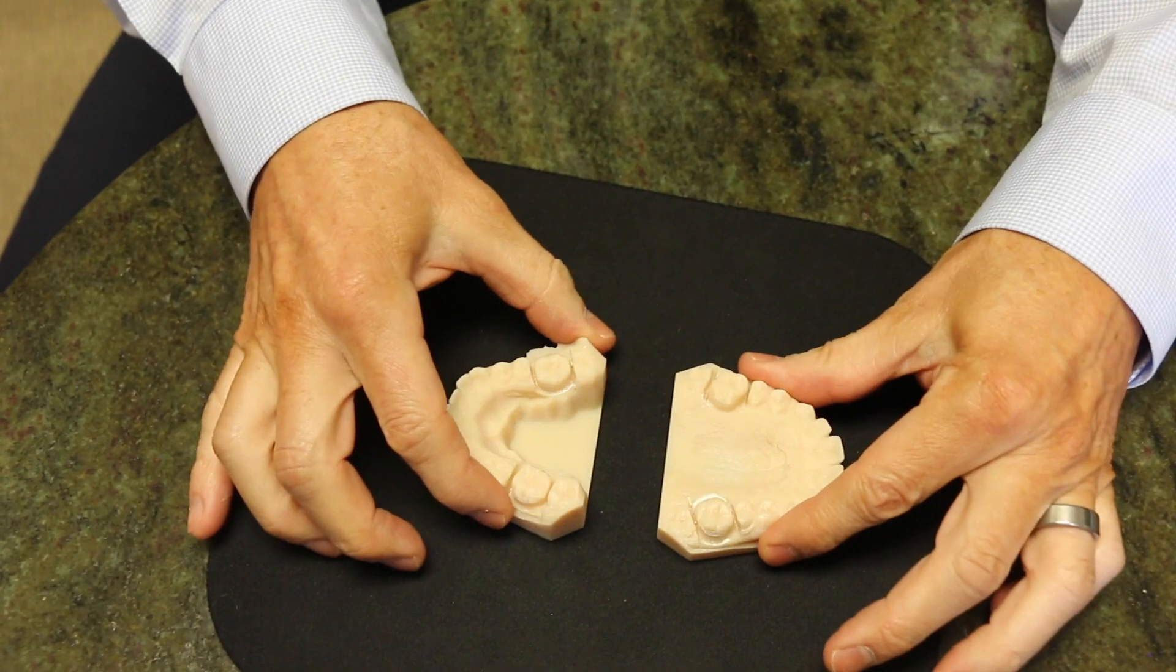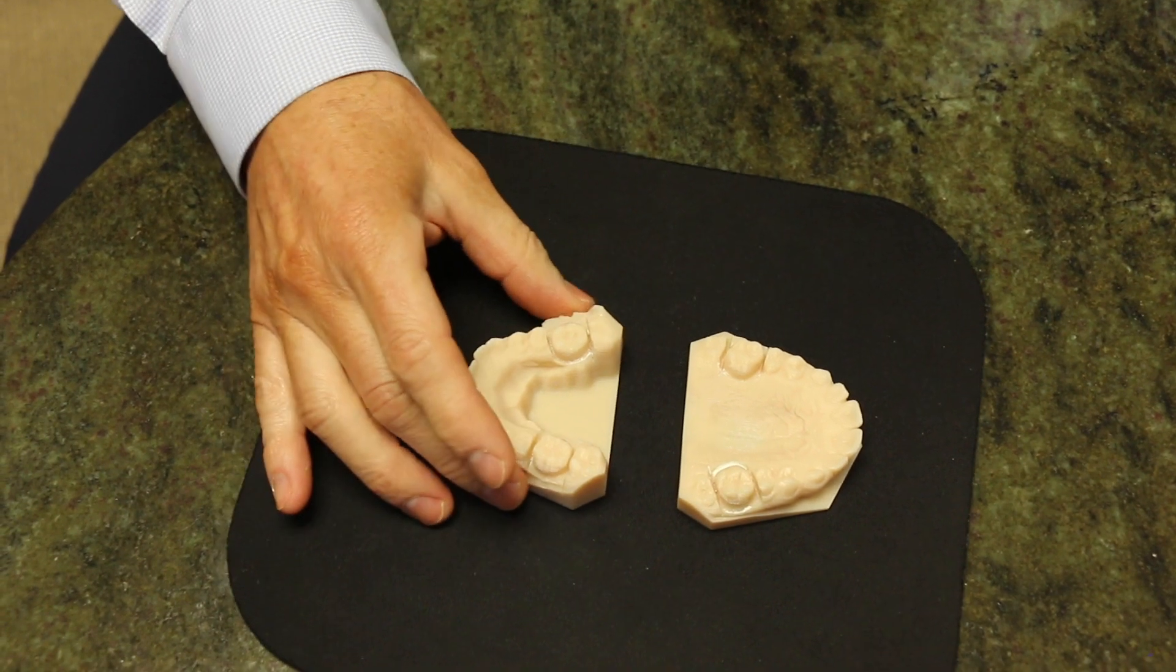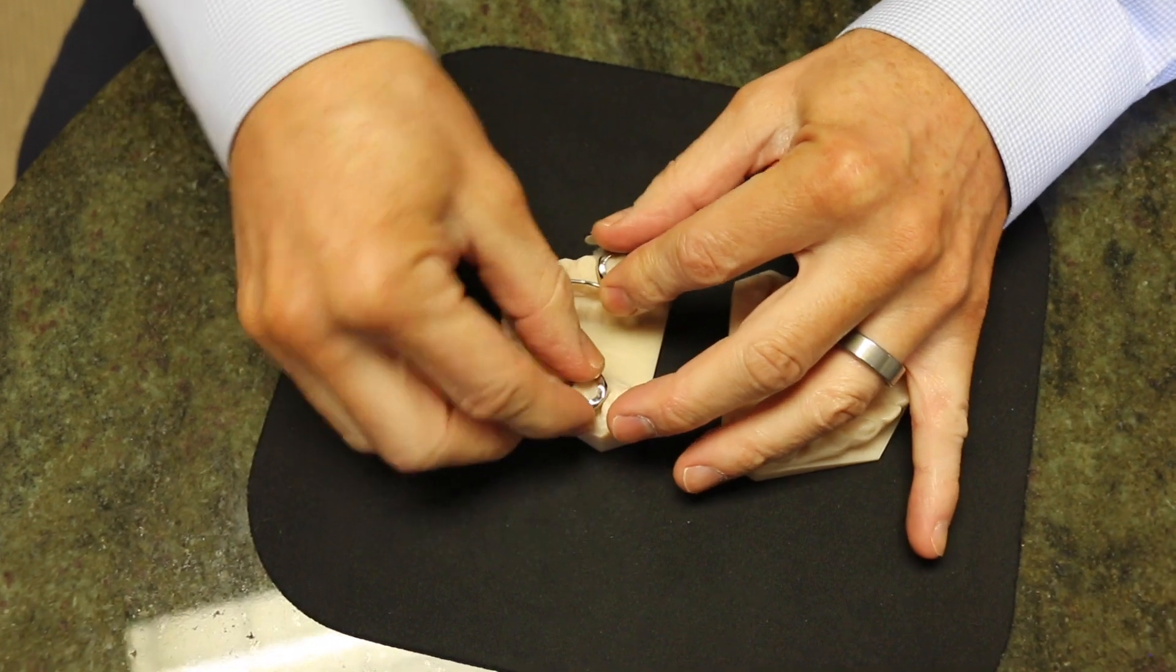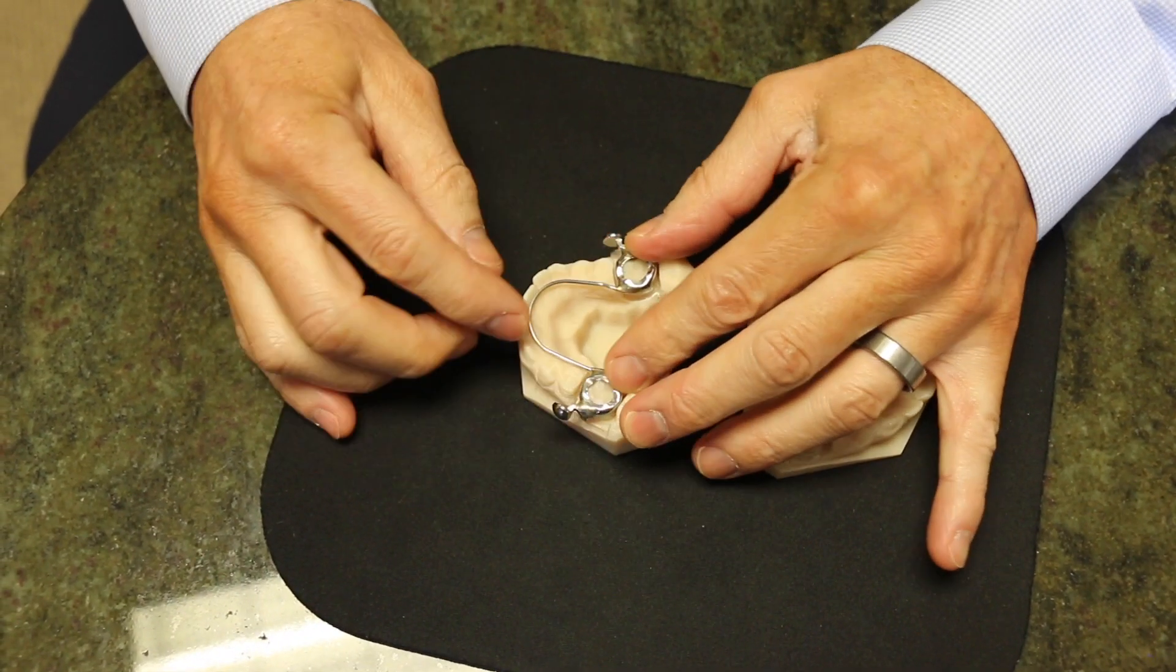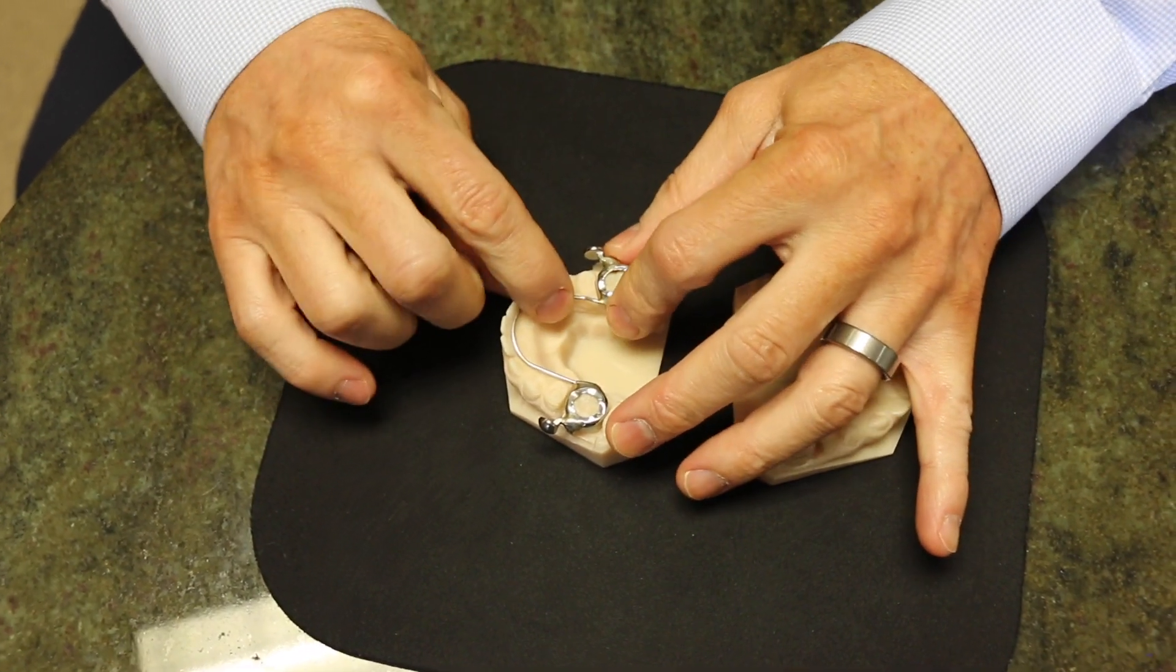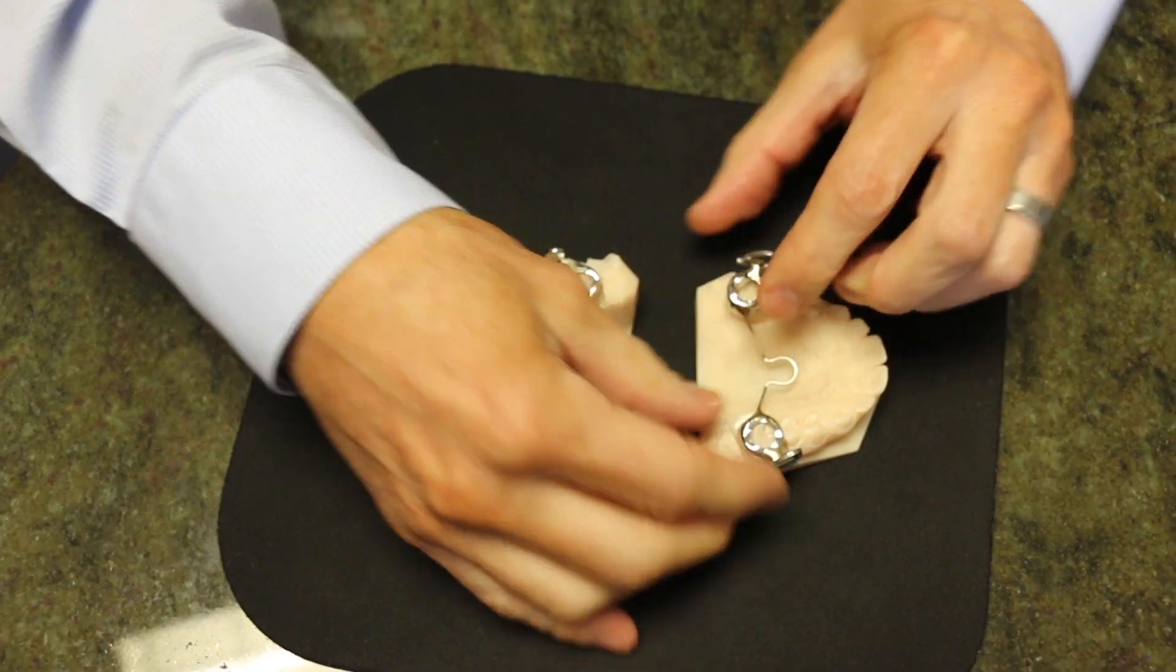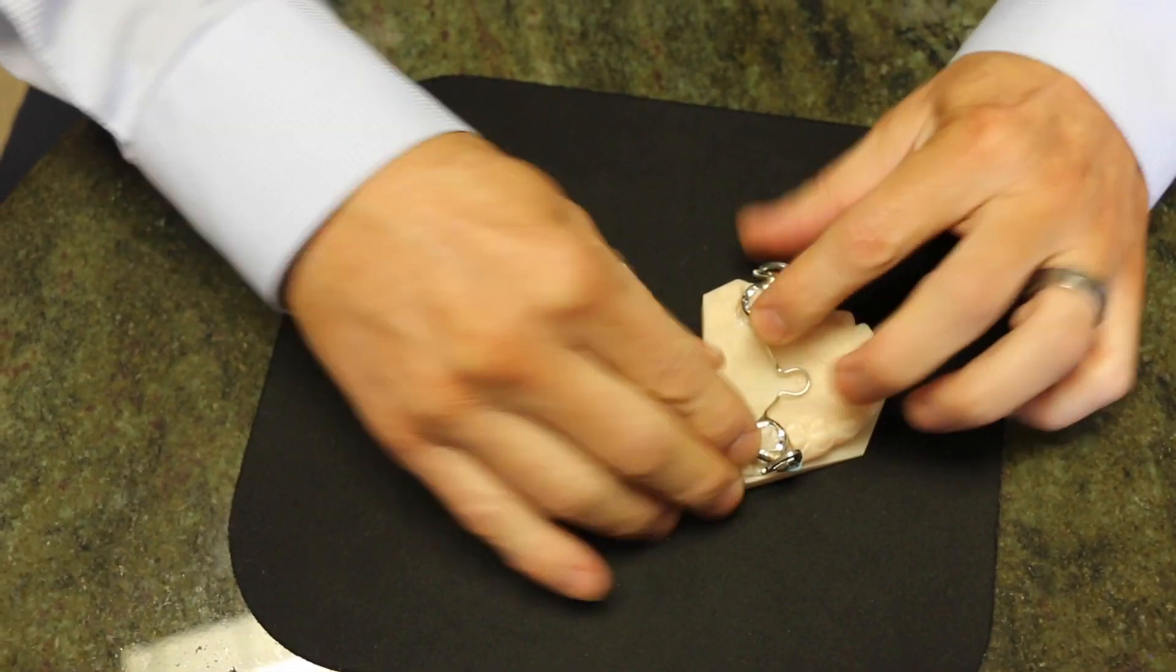Instead what we do for patients like this who are still growing is we use a special appliance called the MARA appliance and it comes in two parts. One part fits over the bottom teeth, fits over the bottom molars with a little wire that extends forward and rests against the back side of the front teeth, and then there's another part that fits in the roof of the mouth like this.